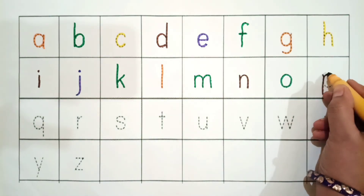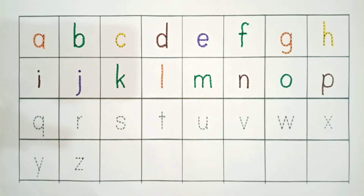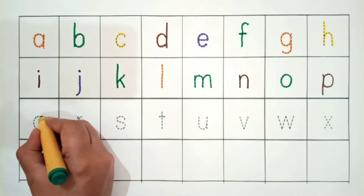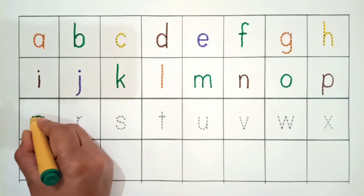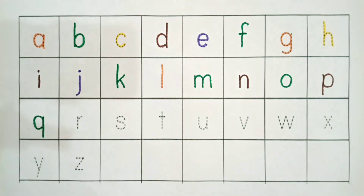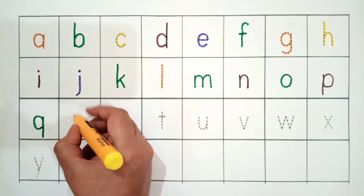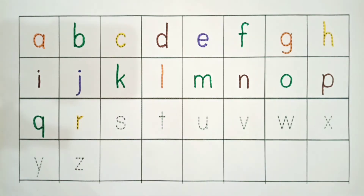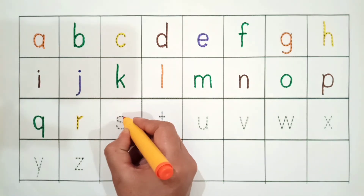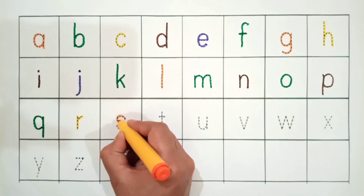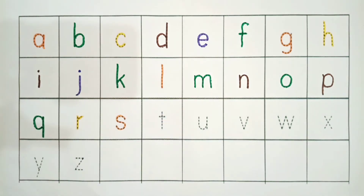P for Pencil. Q for Queen. R for Radish. S for Support.